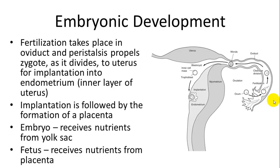If fertilization takes place — generally in the uterine tube — peristalsis or contractions propel the zygote as it starts to develop and undergo cell division. It becomes a morula, a ball of cells, then a blastocyst, a hollow ball of cells. The outer layer releases and a trophoblast forms, which helps implantation into the endometrium. After implantation, the placenta forms. Initially the yolk allows nutrients for the developing embryo, and once the placenta is fully formed, nutrients are exchanged through it.